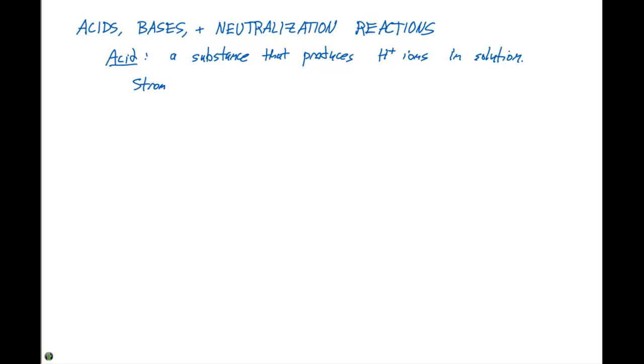So let's list out the strong acids, and there are seven of them. The strong acids are hydrochloric acid, which is HCl, hydrobromic acid, which is HBr, hydroiodic acid, which is HI. We also have nitric acid, which is HNO3, perchloric acid, which is HClO4, chloric acid, which is HClO3, and sulfuric acid, which is H2SO4. These are the seven strong acids.